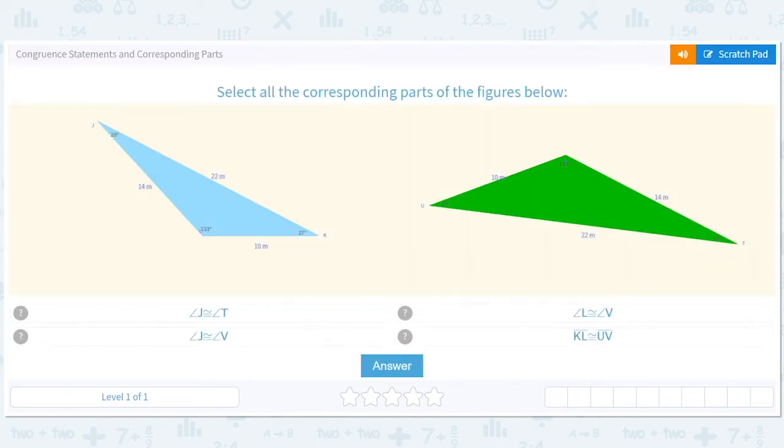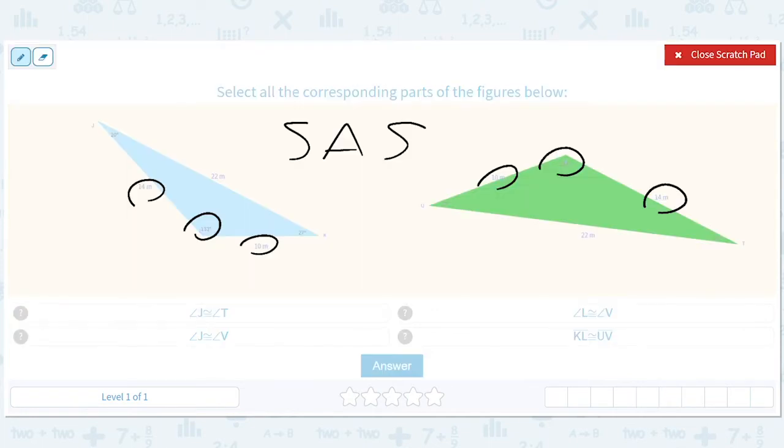So if you have angle J, A, is that going to be congruent to angle T? Yeah, because this is the same, this is the corresponding angle. So that's true.